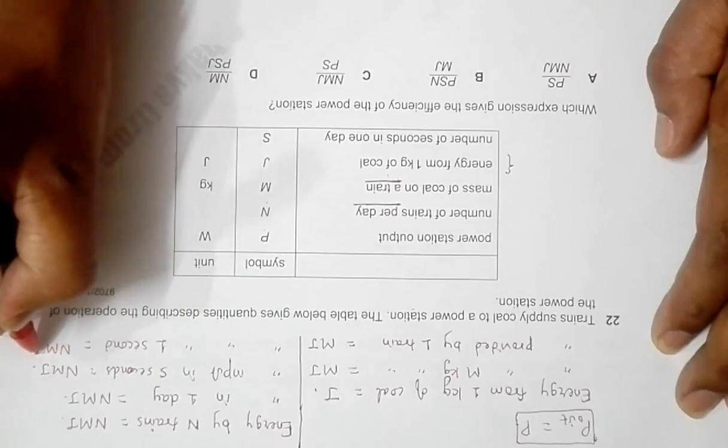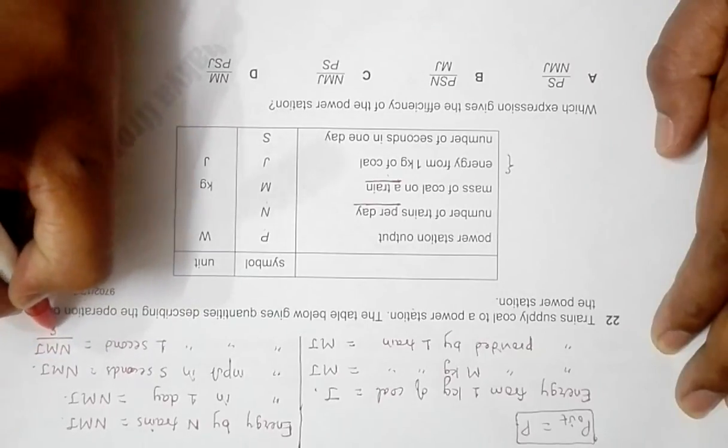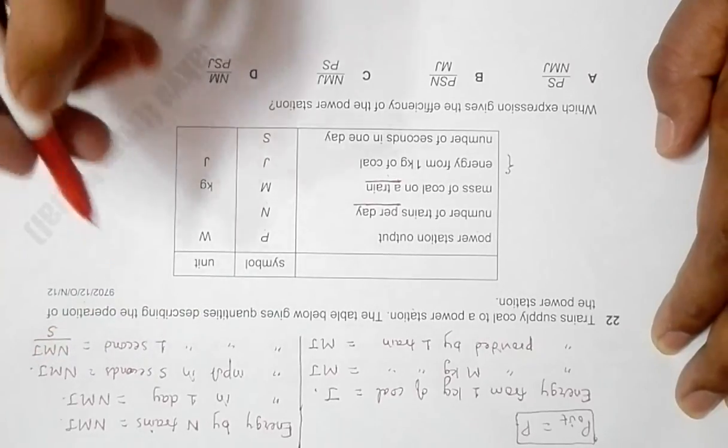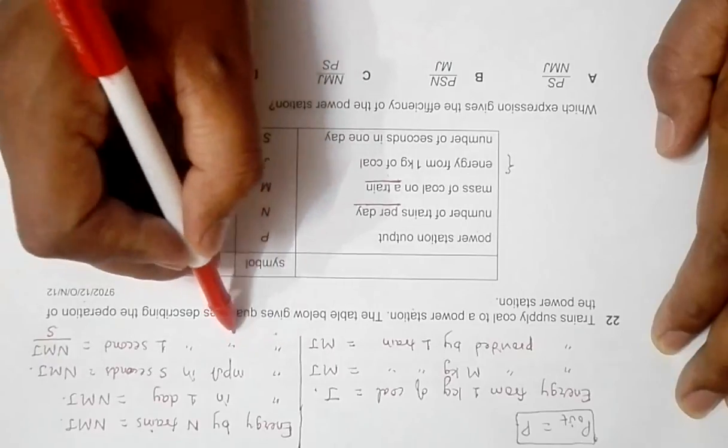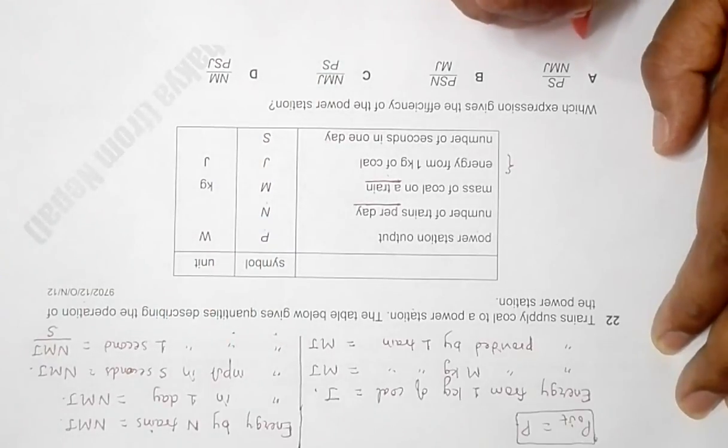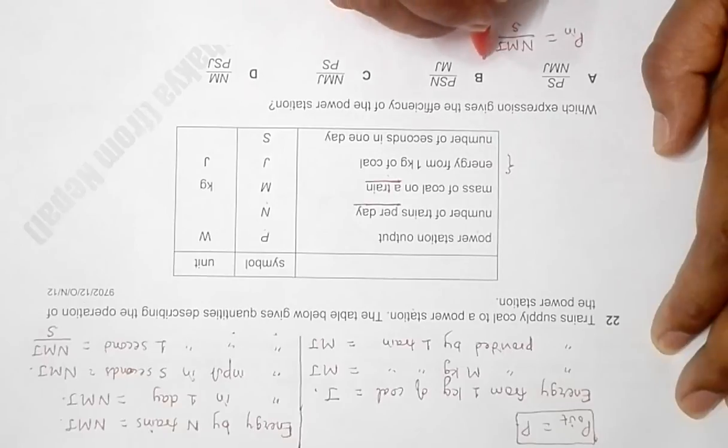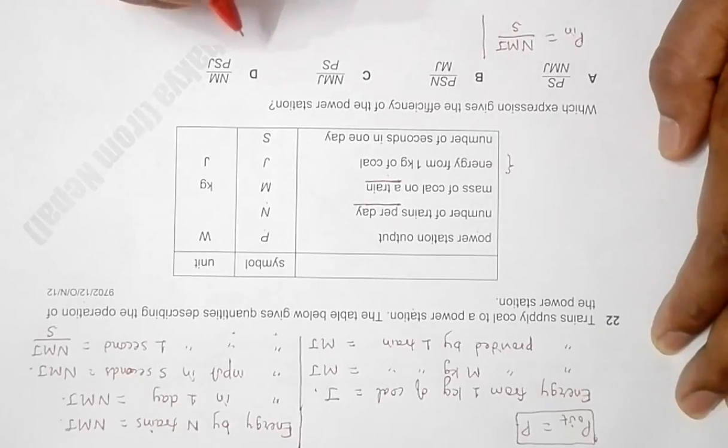nmJ divided by s. So since this is energy input in one second, this means that the power input should be equal to nmJ by s. So now the value of efficiency will be...